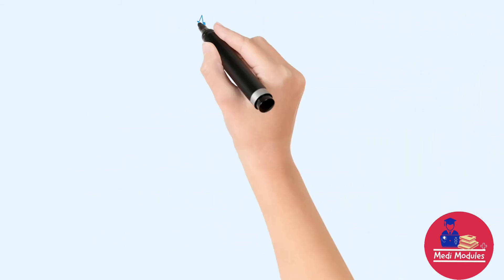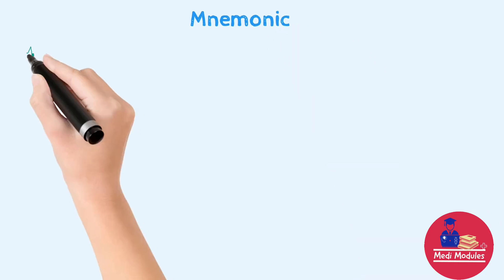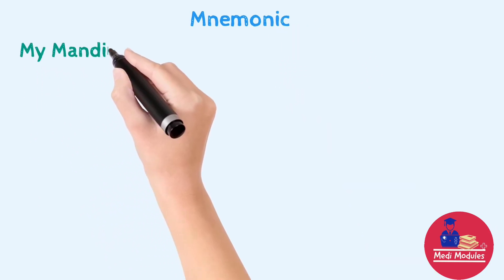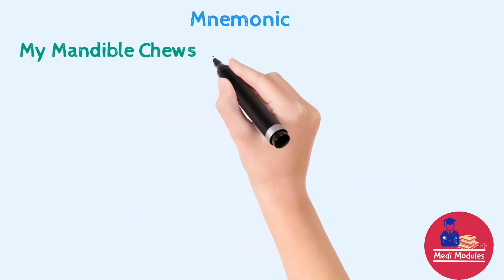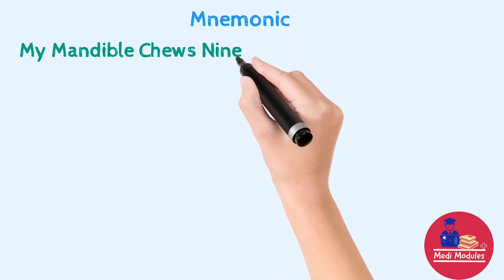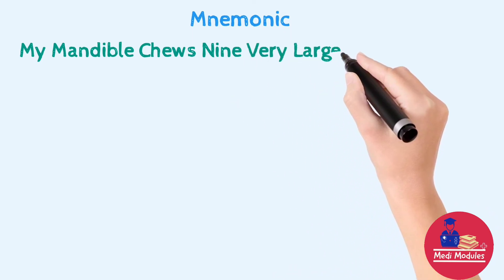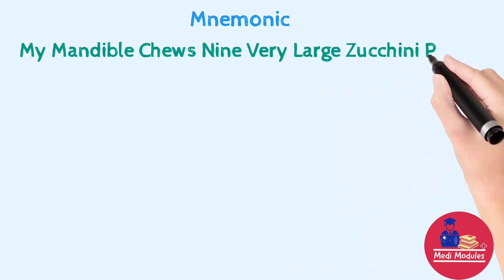Now we will see its mnemonic. With this amazing mnemonic, you can learn it very easily. And the mnemonic is: my mandible choose 9 very large zucchini pizzazz.